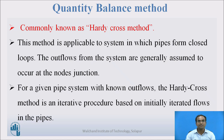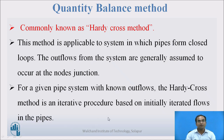The Quantity Balance Method is generally known as the Hardy Cross Method. This method is applicable to systems in which pipes form closed loops. The outflows from the system are generally assumed to occur at node junctions. For a given pipe system with known outflows, the Hardy Cross method is an iterative procedure — a trial and error method — which is based on initially assumed flows in the pipes.